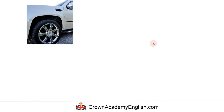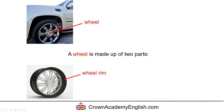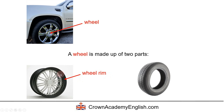Let's look again at the wheels. A wheel is in fact made up of two parts. First of all, on the inside, this is called the wheel rim — this is the actual wheel. To be 100% correct, the wheel is only this part: the wheel rim. And on the outside of the wheel rim, we have a tyre. So the whole thing we often call simply the wheel.